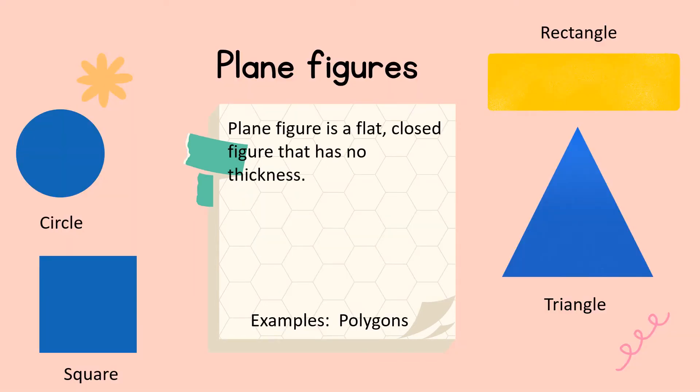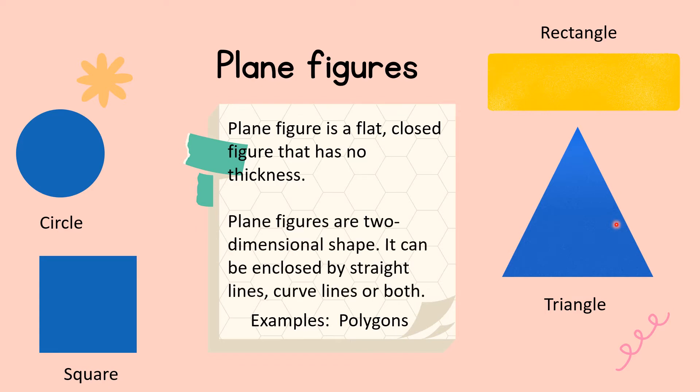So now plane figure is a flat closed figure that has no thickness. They are flat. Look at that. And they don't have thickness. They are what we call two-dimensional shape. It can be enclosed by straight lines, curved lines, or both.